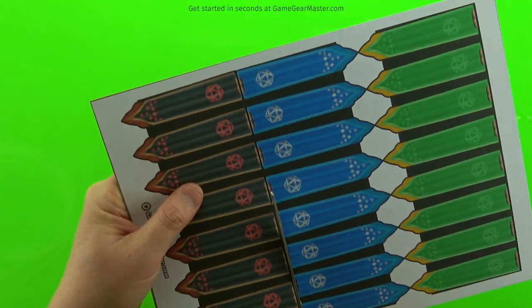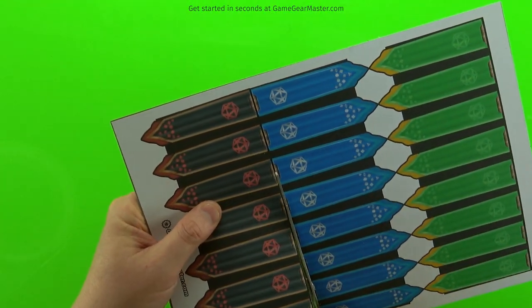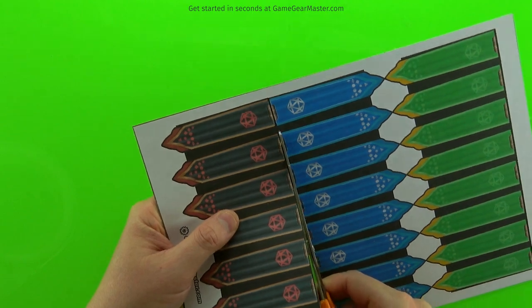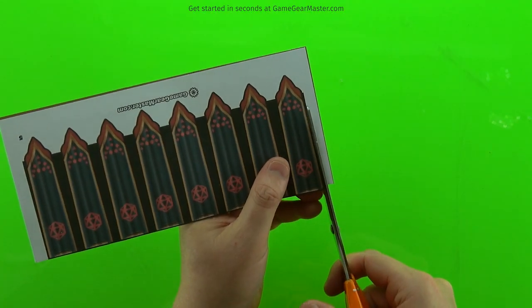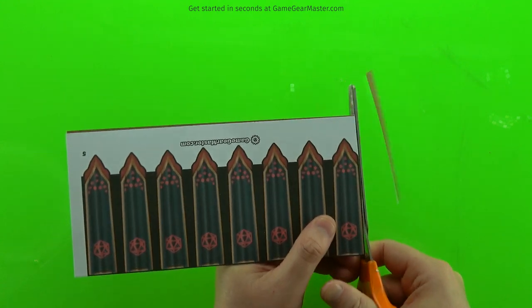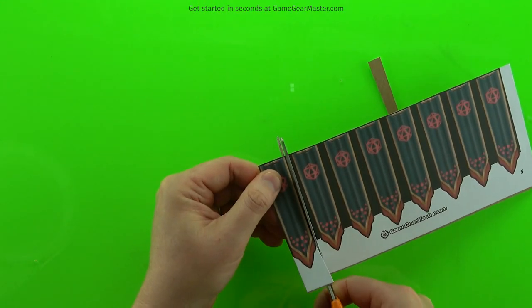Then just cut out the flags. Now you'll notice there's a thick black border around these flags. This is to ensure that if you cut them a little off you won't have white edges. It'll kind of look icky. So you should have a lot of room for error there.